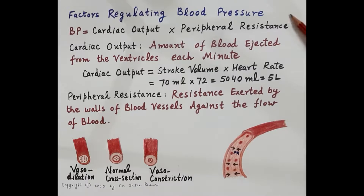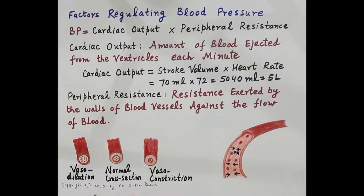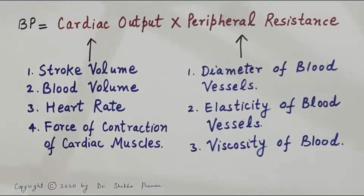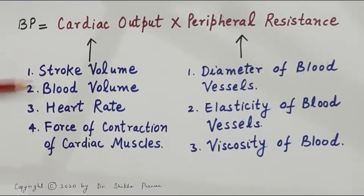So blood pressure depends upon cardiac output and peripheral resistance, and peripheral resistance depends upon vasoconstriction. Now let us talk about the factors on which cardiac output and peripheral resistance depend. Cardiac output depends on these factors: the first is stroke volume — higher the stroke volume, more is the cardiac output. Higher the force of contraction of the heart muscles, more will be the stroke volume, resulting in higher cardiac output.